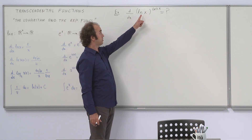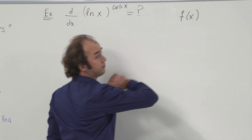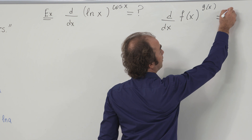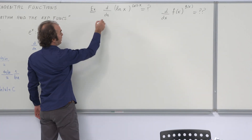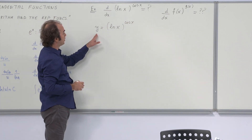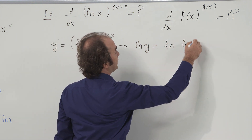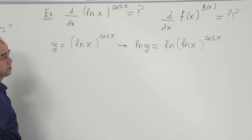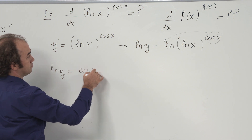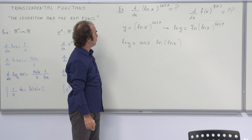The next example is on the derivative of the function ln(x)^cos(x). I'm going to illustrate the procedure when you have f(x) as the base and another function g(x) as the power. Let y = ln(x)^cos(x). We evaluate the logarithm of both sides: ln(y) = ln(ln(x)^cos(x)). We take the power to the front by the well-known properties of the logarithm, so we no longer have any power to differentiate.